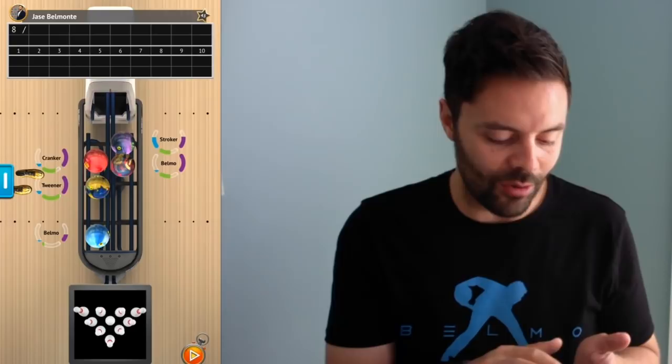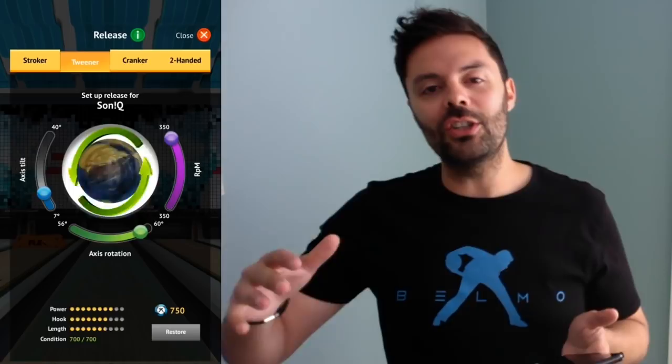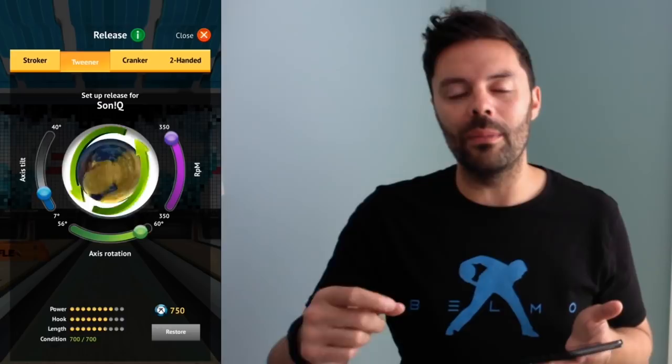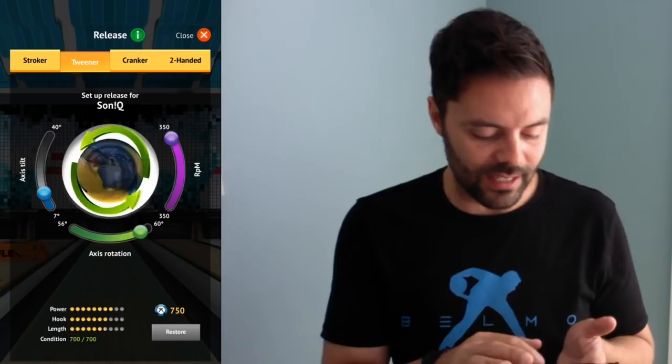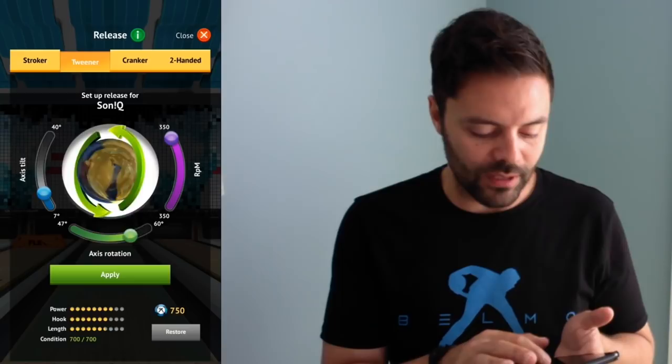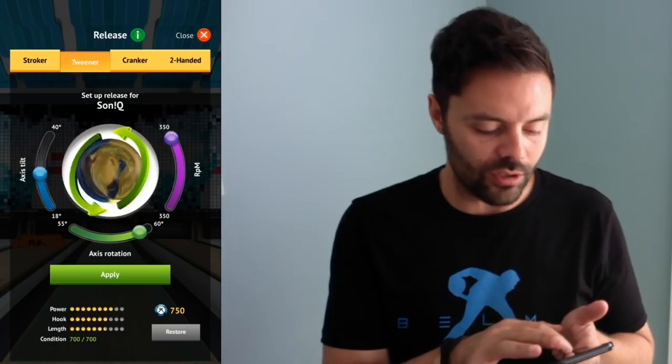The next style that you're going to see is the tweener which is the next style up and you can progress to each of these different playing styles as you level up into the game and unlock each style. And within each style you also have the ability to increase your parameters slightly to a higher maximum. So here we have the tweener. As you can see I've now unlocked most, actually all of the tweener's capabilities which gives me a maximum RPM of 350 RPM, my axis rotation can go all the way from naught to 60 degrees and my axis tilt can go naught to 40 degrees.